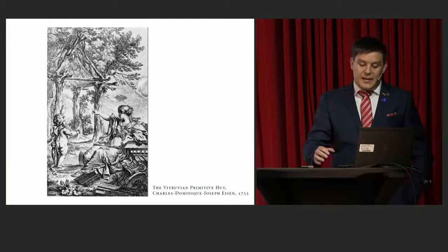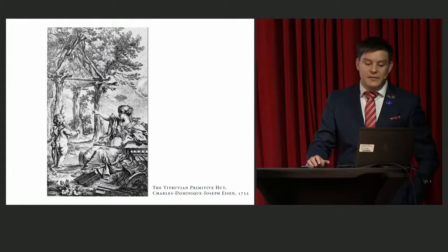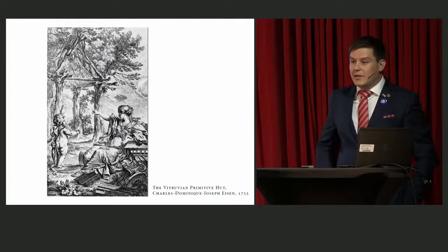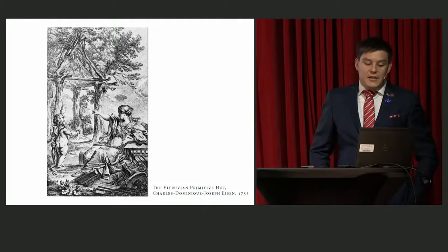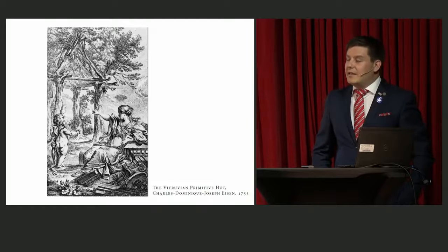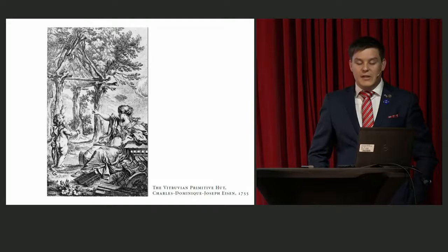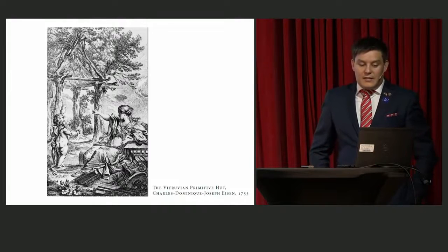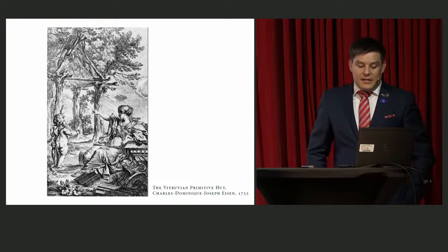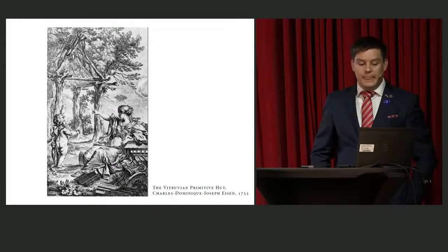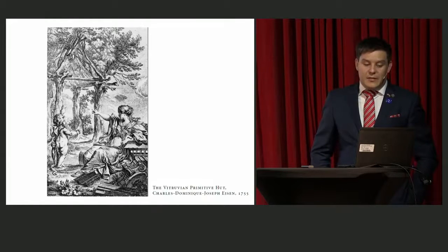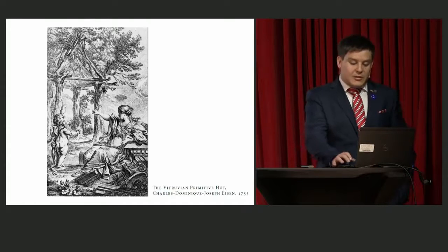This is Eisen's etching from 1755 called the Vitruvian hut, or the birth of architecture. What he's trying to explain is fractals — because fractals come from nature, architecture comes from humans, and we are from nature. This image shows Pallas Athena, the goddess, explaining to the archangel Gabriel where a building came from, probably referring to these tree trunks put together almost like a temple gable.